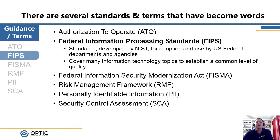Next we have the Federal Information Processing Standards, or FIPS. FIPS are developed by NIST to help define ways to meet specific information technology topics. Most commonly, you may have heard of FIPS 199, which is the standard for security categorization of federal information and information systems — the document that helps determine whether a system will be low, moderate, or high baseline. Another common FIPS document is FIPS 140, which covers security requirements for cryptographic modules.